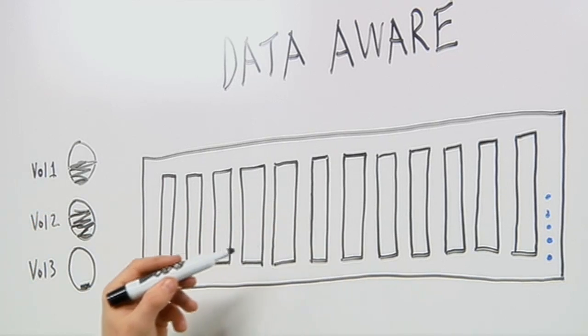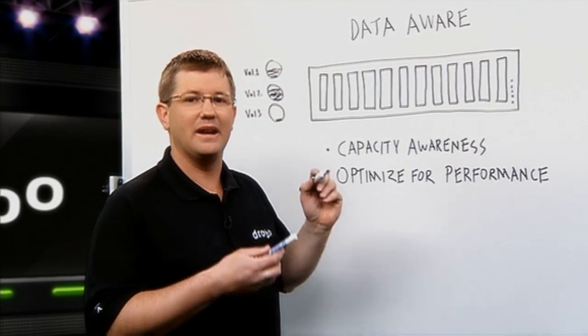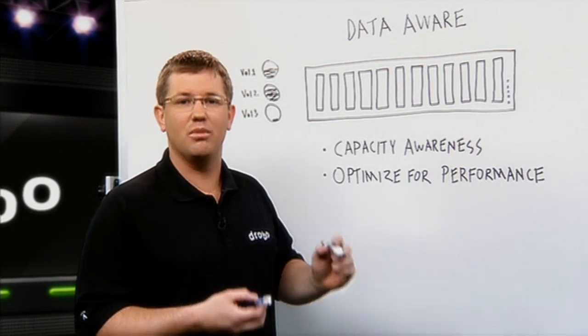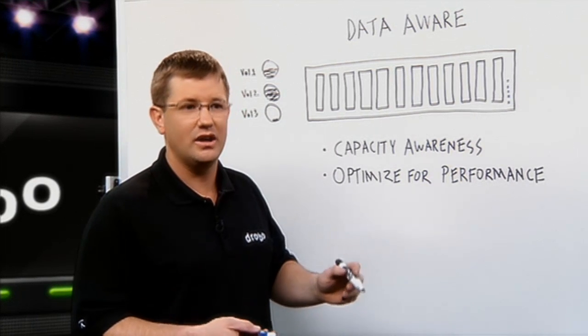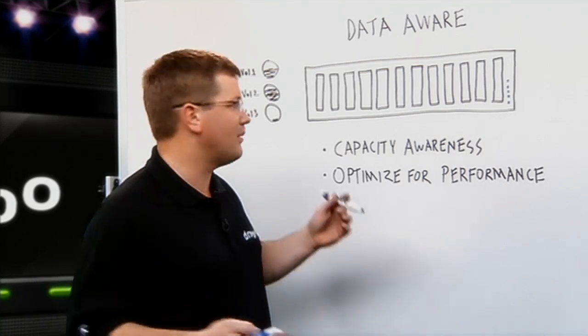If the data is transactional in nature, meaning it's coming from a database with smaller, random IOs, large stripes when they have to create parity data are not as optimized.